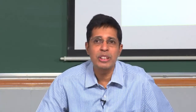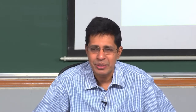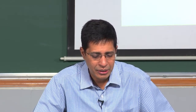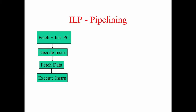What is pipelining? Pipelining is what we term as instruction level parallelism, ILP — not integer linear programming. I have done this in class earlier but will do it once more. When I want to execute an instruction, I fetch the instruction and increment the PC, then decode the instruction, then fetch data, then execute the instruction, then store back the result. These are the five general stages in execution of an instruction.